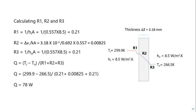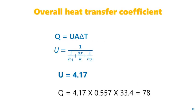Moving to calculations, we calculate R1 = 1/(Hi·A), R2 = ΔX/(K·A), and R3 = 1/(Ho·A). Putting in the values of the different parameters, we get Q = 78.78 W. To calculate the overall heat transfer coefficient U, we put the values into the formula and get U = 4.17 W/(m²·K). Putting this back to calculate total heat transfer, we again get 78 W.